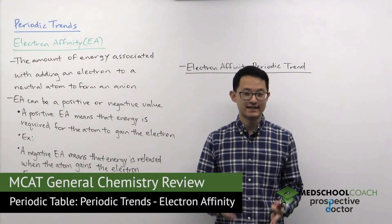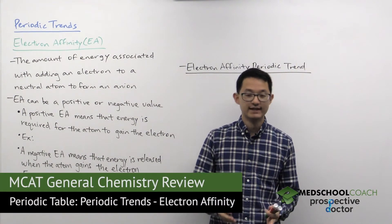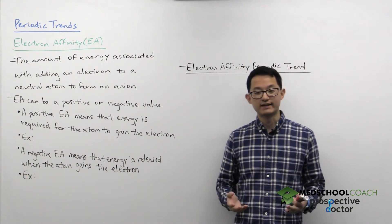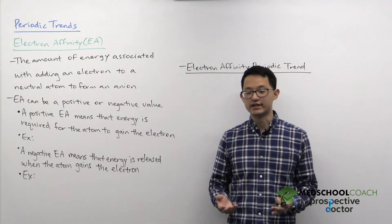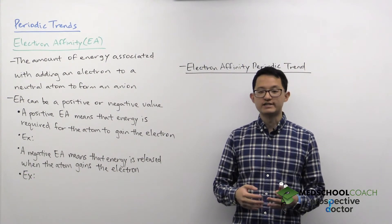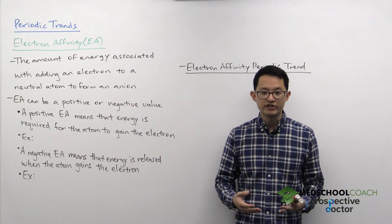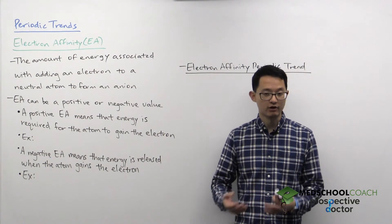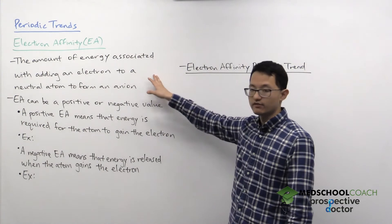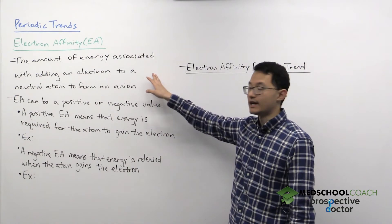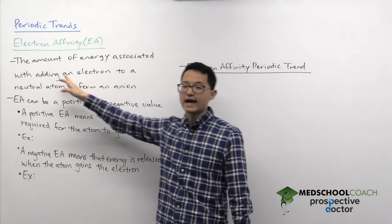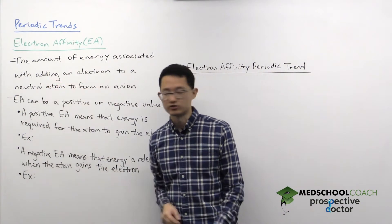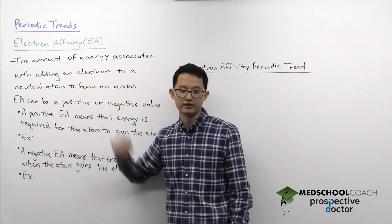Our next periodic trend is electron affinity. Electron affinity in many ways is the opposite of ionization energy. Whereas ionization energy is the amount of energy required to remove an electron from an atom or ion, electron affinity is the energy associated with adding an electron to an atom to form an anion.